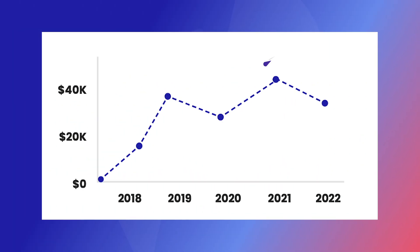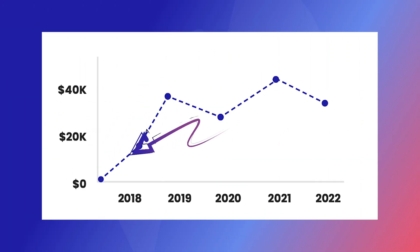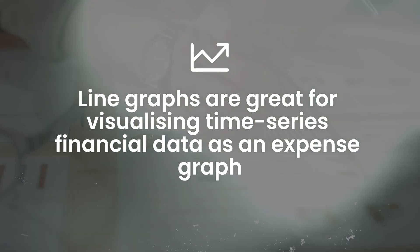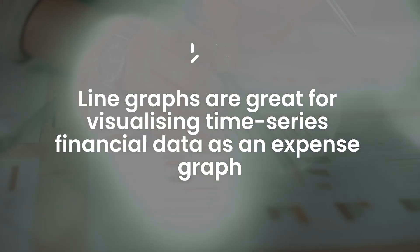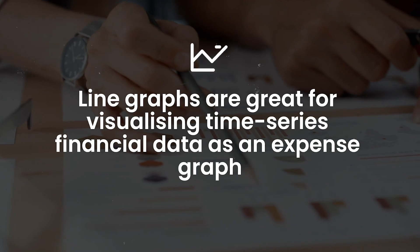Another great option is a line graph. Picture data points connected together by lines. The key thing is it maps data over time as the line moves left to right along the x-axis. Line graphs are great for visualizing time series financial data such as revenue, profit loss, cash flow, or other metrics over a period of time. They're also great because you can layer multiple data lines in a single graph — say you wanted to compare this year's monthly sales figures versus last year's. A two-line chart makes this super simple.